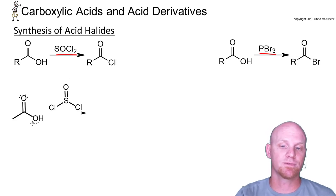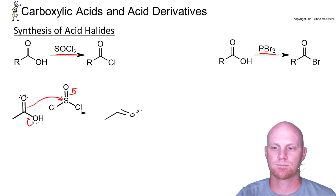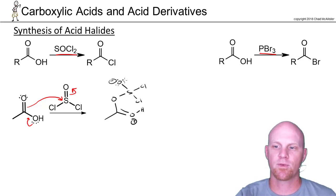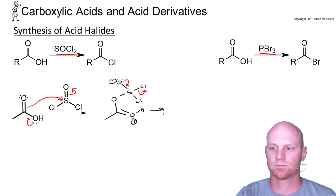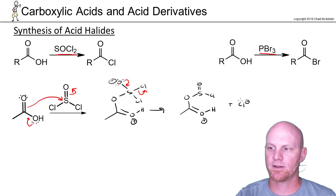The first step is nucleophilic attack — we come and attack the sulfur. We kick those pi electrons out to the oxygen, leaving it with a negative formal charge, and we're still bonded to two chlorines. Those electrons kicked out to the oxygen come right back down and kick off one of the chlorines as a leaving group. We now have a chloride ion floating around in solution.